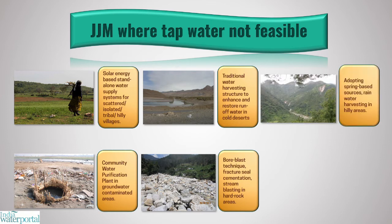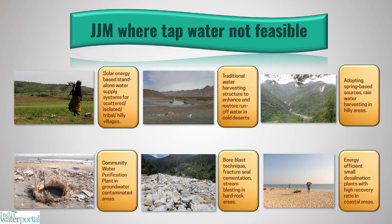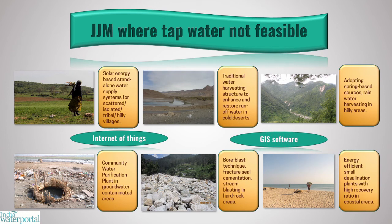In hilly areas, adopting spring-based sources, rainwater harvesting, and standalone borewell systems, if feasible, will be explored. In coastal areas, energy-efficient small desalination plants with high recovery ratio will be explored along with construction of subsurface dikes in rivers. Use of Internet of Things and geographic information system software will also be required for planning and monitoring.